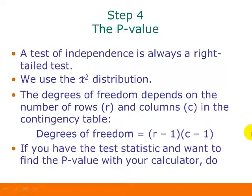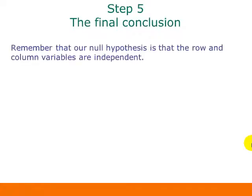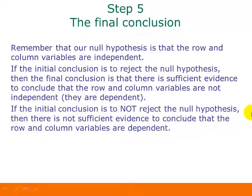If you have the test statistic and want to find the p-value with your calculator, use the chi-squared CDF function. Since this is a right-tailed test, input the test statistic, then a large number like 10,000, then your degrees of freedom. For the final conclusion: if we reject the null hypothesis, there is sufficient evidence that the row and column variables are not independent — they are dependent. If we fail to reject, there is not sufficient evidence to conclude they are dependent.